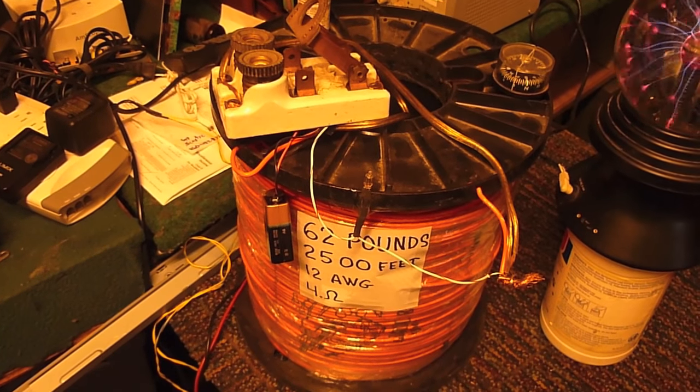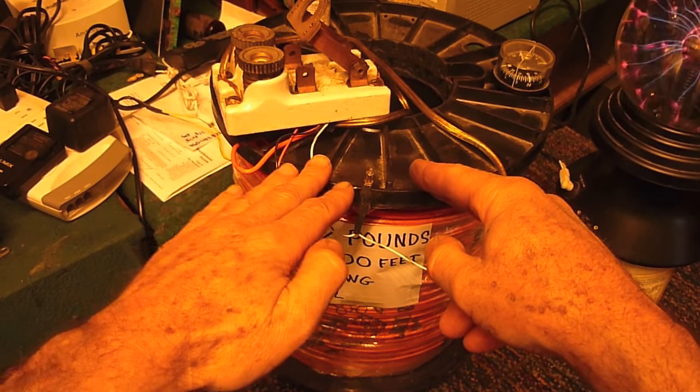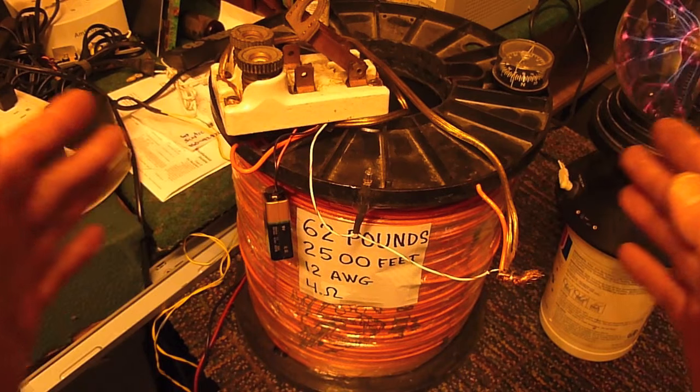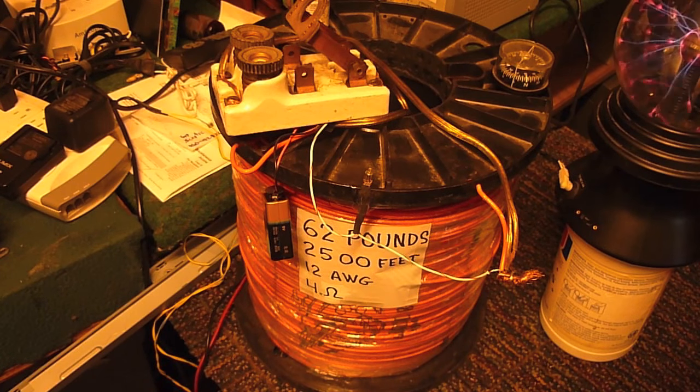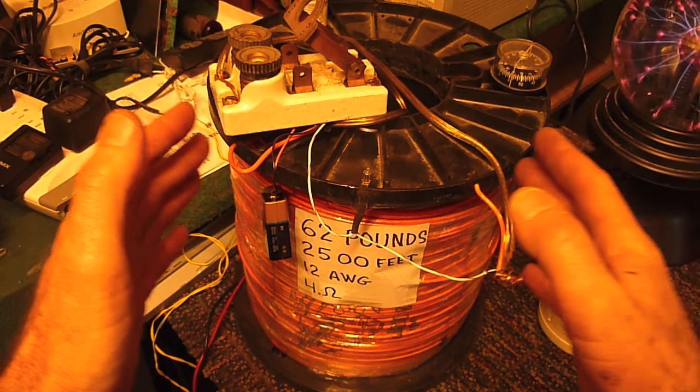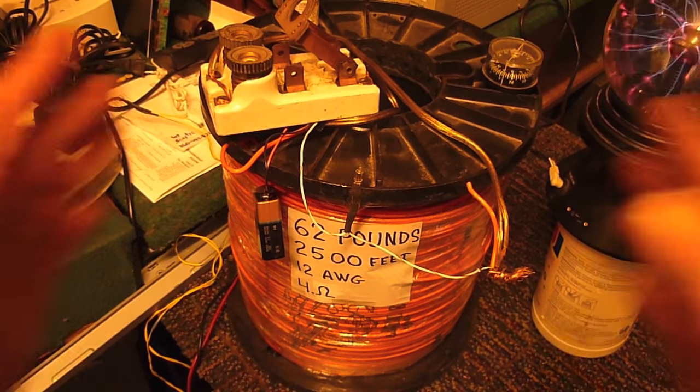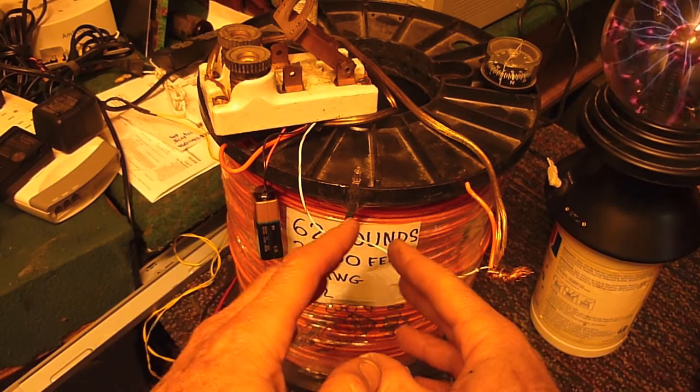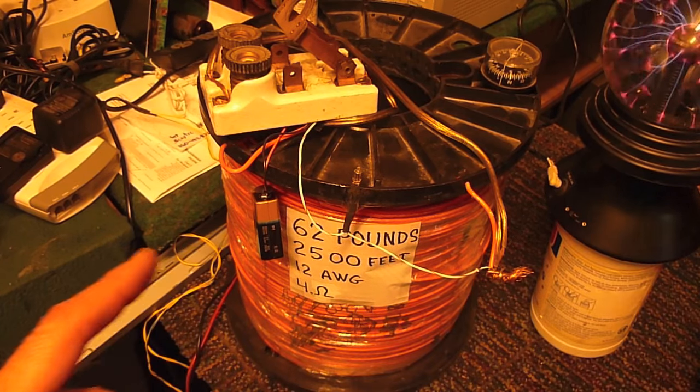Now the back spike, for those that don't know, any time you energize a large coil like this, or any coil for that matter, you generate a magnetic field. And when you cut the power going to the coil, what happens is the magnetic field you created collapses back in on the wire from which it came. And in the process of moving back to the wire from which it came, it cuts across neighboring wires and it produces a second jolt of energy.